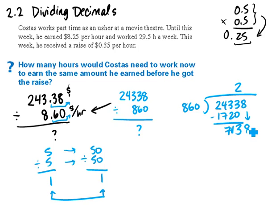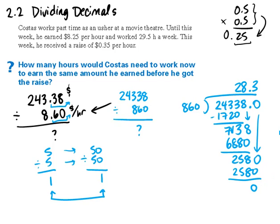860 goes into 2,580 three times. 3 times 860 equals 2,580, and I am finished. That means that Costas must work 28.3 hours to get the same pay.